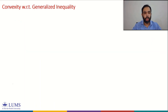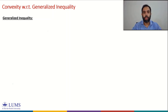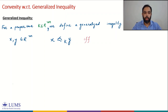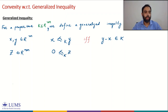We begin with a quick review of generalized inequality and convexity with respect to generalized inequality. A proper cone K, which is a subset of R^m, allows us to compare two vectors in R^m and define a generalized inequality. For two vectors x, y in R^m, we say x is less than or equal to y with respect to cone K if and only if y minus x belongs to the proper cone K. Equivalently, a vector z in R^m is greater than or equal to zero with respect to proper cone K if and only if z belongs to K.